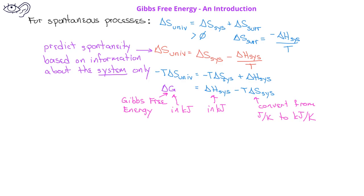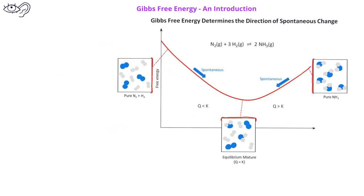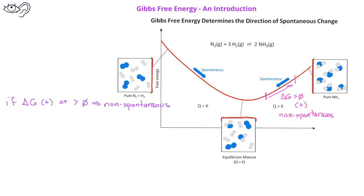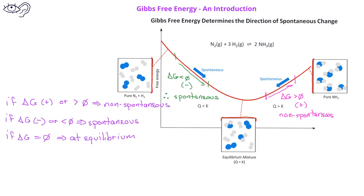Since the Gibbs free energy change is proportional to the negative entropy change for the universe, we can use the Gibbs free energy change to help us determine spontaneity, as represented in the figure here. If the Gibbs free energy change is positive, the reaction in that direction is going to be non-spontaneous. However, if the Gibbs free energy change is negative or less than zero, that reaction will be spontaneous. If the Gibbs free energy change is zero, that indicates that the system is at equilibrium.